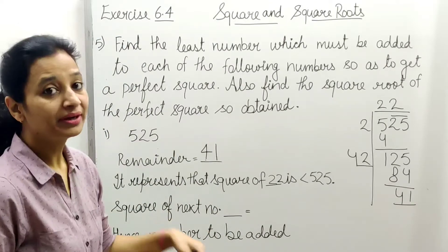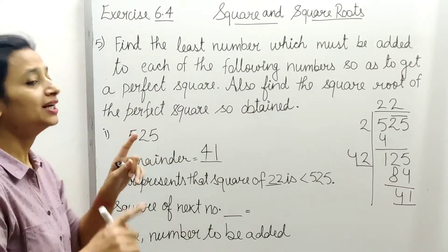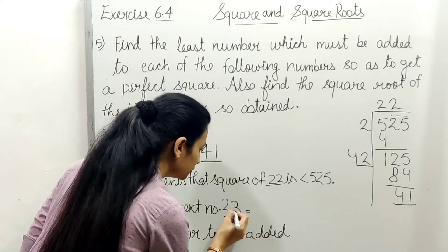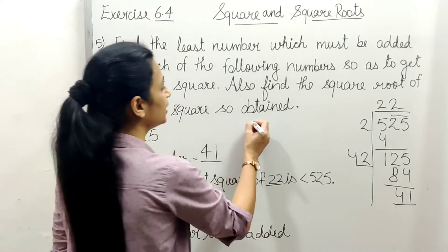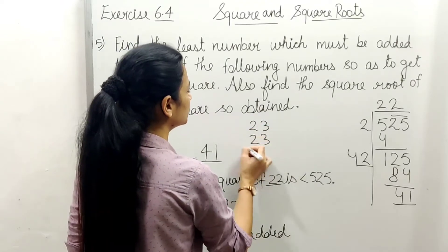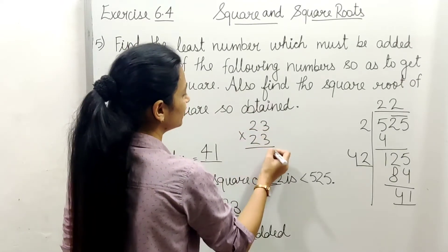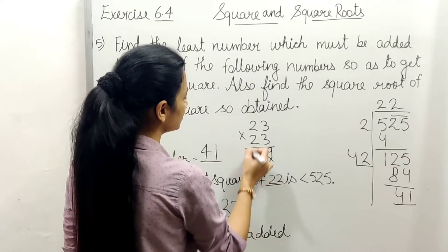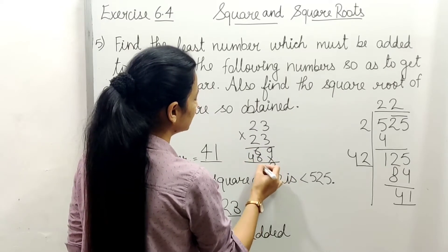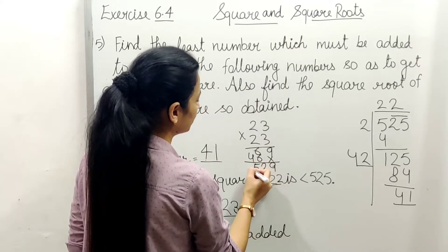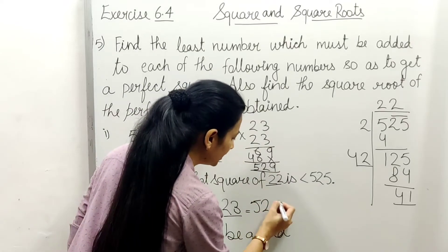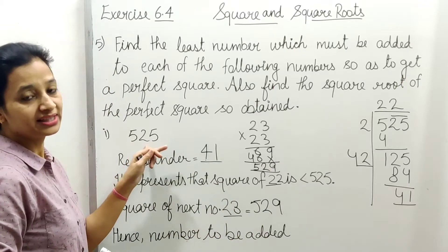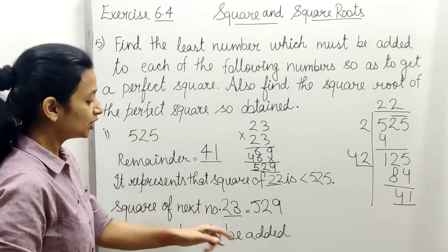It represents that square of 22 is less than 525. Next, square of next number: 22 is smaller, so 23 is the next number. Let's calculate 23 squared: 23×23 equals, 3×3=9, 3×2=6, 2×3=6, 2×2=4, gives 529.